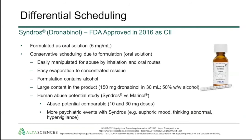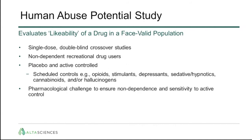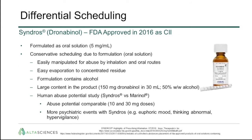The differential scheduling of Syndros — dronabinol approved in 2016 as a Schedule II compound — is an interesting case. Formulated as an oral solution of 5 mg/mL, it has a conservative scheduling due to the formulation. Syndros contains alcohol, with about half of the 30 mL solution being alcohol, around 150 mg. Because study data showed more psychiatric events with Syndros, FDA deemed it Schedule II, in contrast to Marinol, which is Schedule III — largely moved from Schedule II to Schedule III for patient accessibility. This is an example of how a formulation can impact abuse potential and therefore product scheduling.